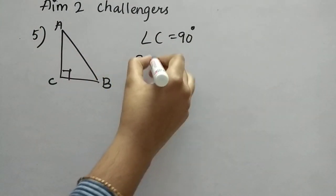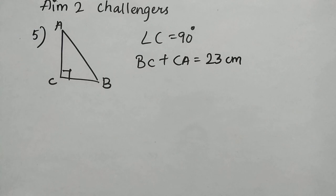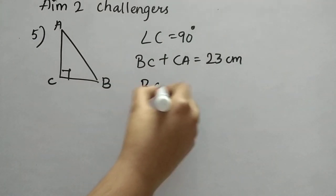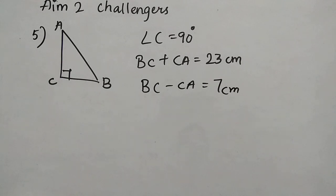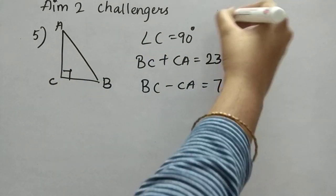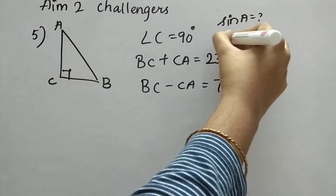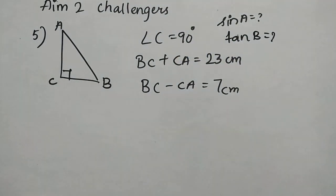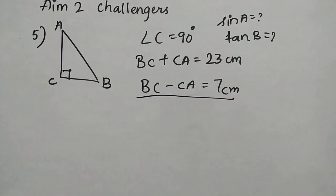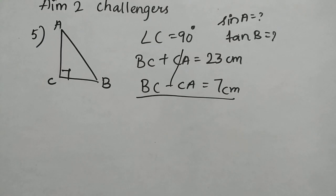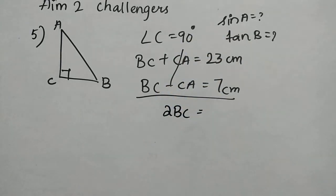They have given that BC plus CA is equal to 23 cm, and BC minus CA is equal to 7 cm. We have to find sin A and tan B. The first step is to add these two equations. The CA terms cancel, leaving 2BC equal to 23 plus 7, which is 30.